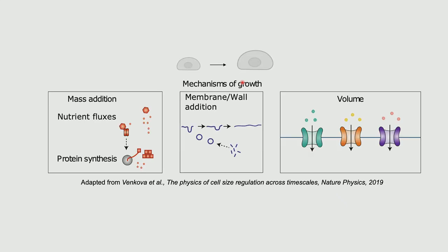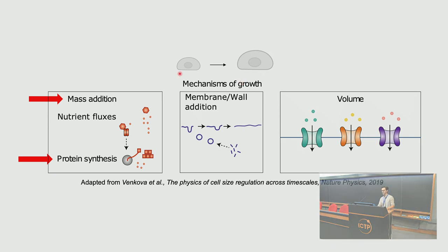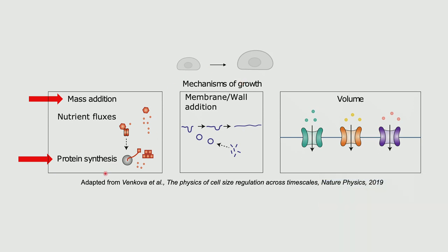Before going to the main topic of this talk, just some definitions. Growth is fundamental in cell biology and physiology, but there are some subtleties in its very definition. Growth involves many mechanisms — you can grow mass, volume, and surface. I'm going to focus on mass here, specifically biomass addition and protein synthesis, partly because most of the dry mass is really protein mass, at least 50% or above across most organisms.